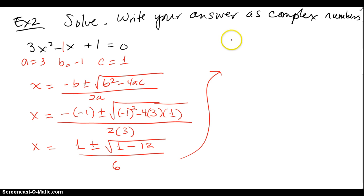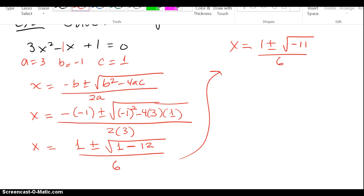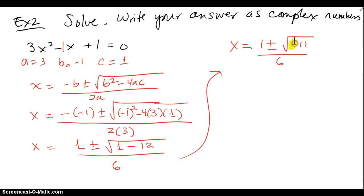All over 2 times 3 is 6. So now I got x equals 1 plus or minus square root of 1 minus 12 is negative 11 all over 6.